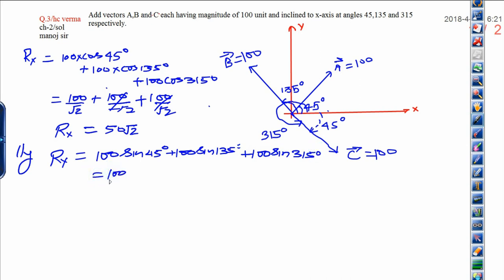Now when you solve it, that will be 100 upon root 2 plus 100 upon root 2, because 135 degrees is in the second quadrant where sin is positive, plus sin 315 degrees, that is sin minus 45, which is minus 100 by root 2. Again this will cancel out and the final result of Ry is 100 divided by root 2, and I can write Ry equals 50 root 2.